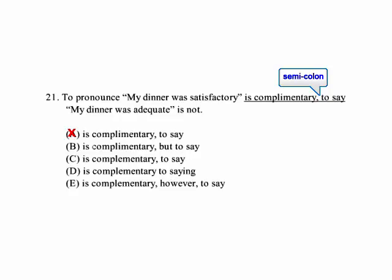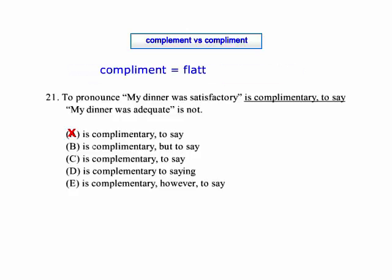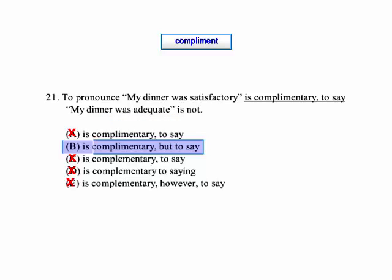The second issue is the distinction between 'complementary' and 'complimentary.' If something is complementary with an E, it means it completes something or goes along with something. If something is complimentary with an I, it means it's a flattering statement. That tells us we can eliminate C, D, and E because they use the wrong 'complimentary.' Between A and B, B contains the conjunction 'but,' which serves as a coordinating conjunction and unifies the sentence — making B the better choice.